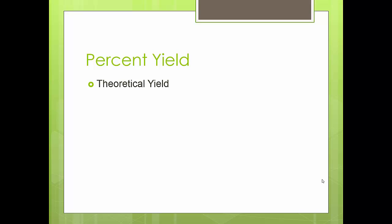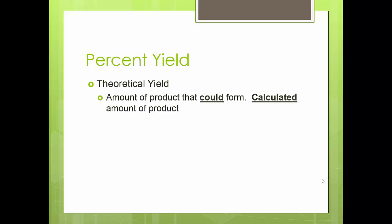So, percent yield. We're going to look at the relationship of how much I actually made in the lab compared to how much I should have made. Quick reminder: everything you've been calculating has been a theoretical yield — in theory, how much could have been made. So theoretical yield is always a calculated value.